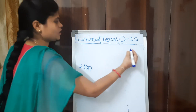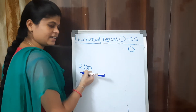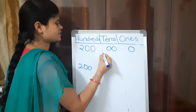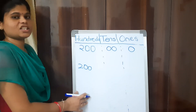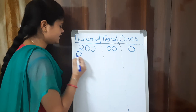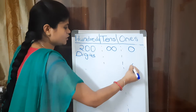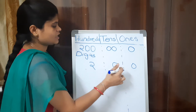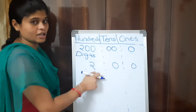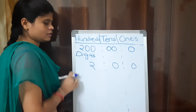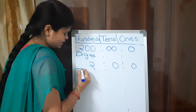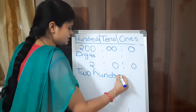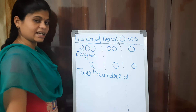How do you write 200 in place values? 0 ones, 0 tens, 2 hundreds. How to write 200 in digits? 0 in 1s place, 0 in 10s place, and 2 in 100s place — so we write 0, 0, 2. The number name of 200 is two hundred. Like this, we can write all numbers till 299.